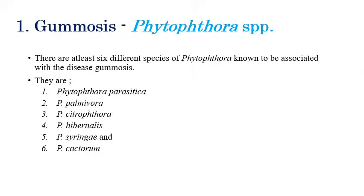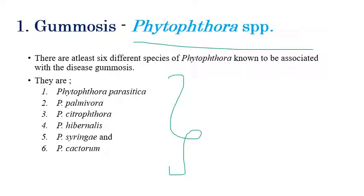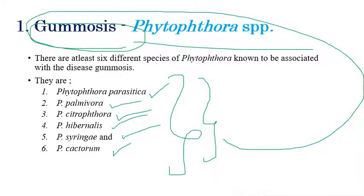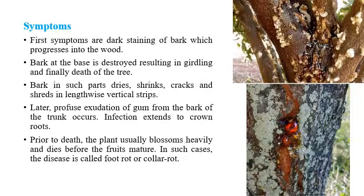The first disease is citrus gummosis, caused by Phytophthora species. Six species of Phytophthora are involved: Phytophthora parasitica, P. palmivora, P. citrophthora, P. hibernalis, P. syringae, and P. cactorum. These six species are all involved in causing gummosis disease.